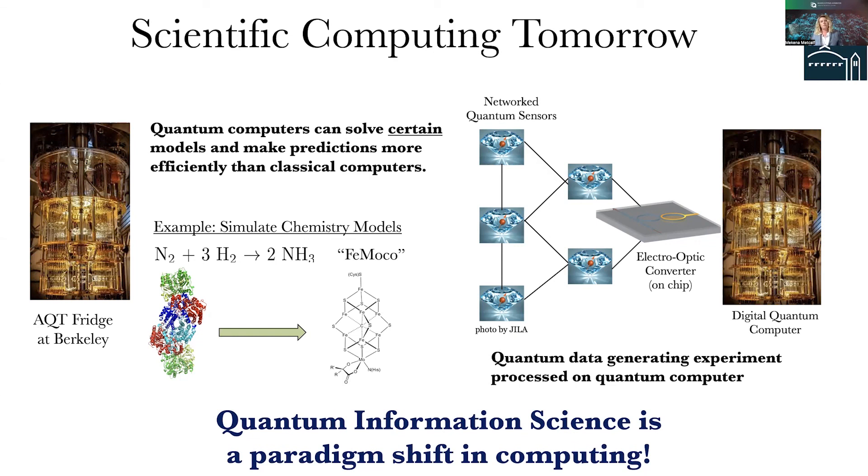So what I want to get across is quantum information science is really different than how we think about classical computing. Yeah, we have certain models and the models we want to be able to solve on classical computers and quantum computers are very similar. But fundamentally, the underlying mechanisms are completely different. And I feel that quantum information science is going to be a paradigm shift in quantum computing and usher in a new age of information. Thank you.